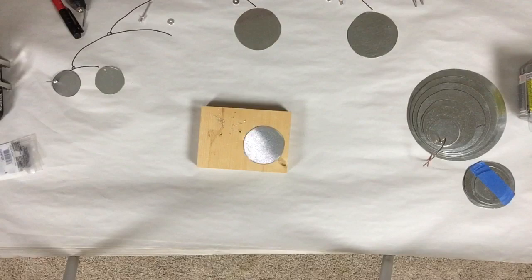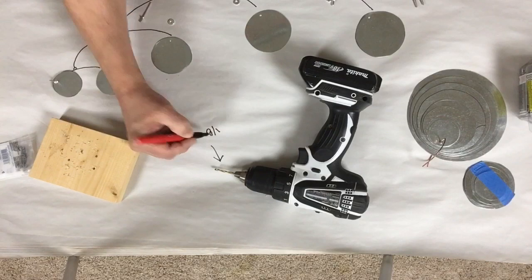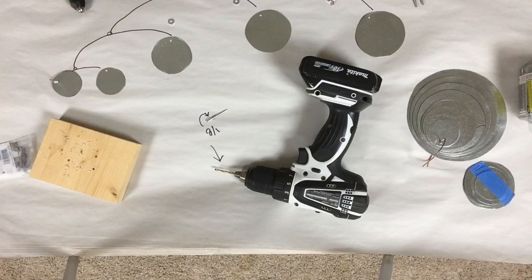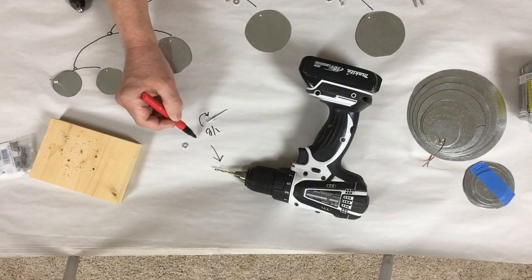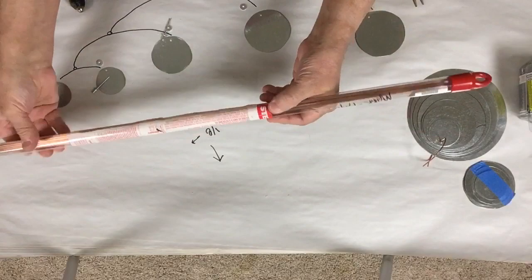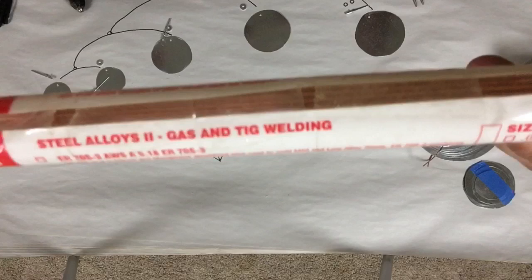And I'll drill each one the proper size for the rivet. So I'm using one-eighth inch rivets. So I'll be drilling a one-eighth inch hole. And the backing washer that I'll be using for the rivet is also one-eighth inch.